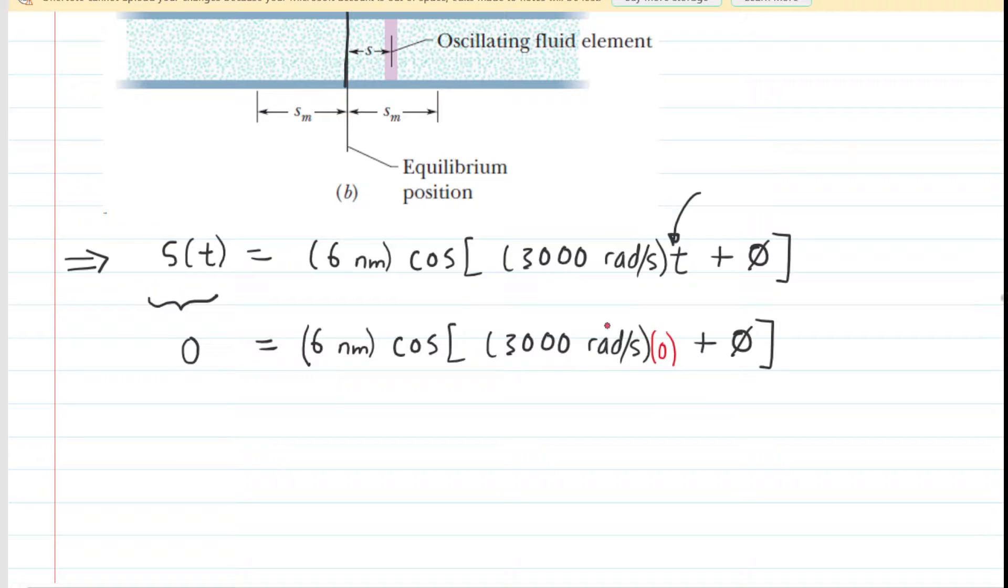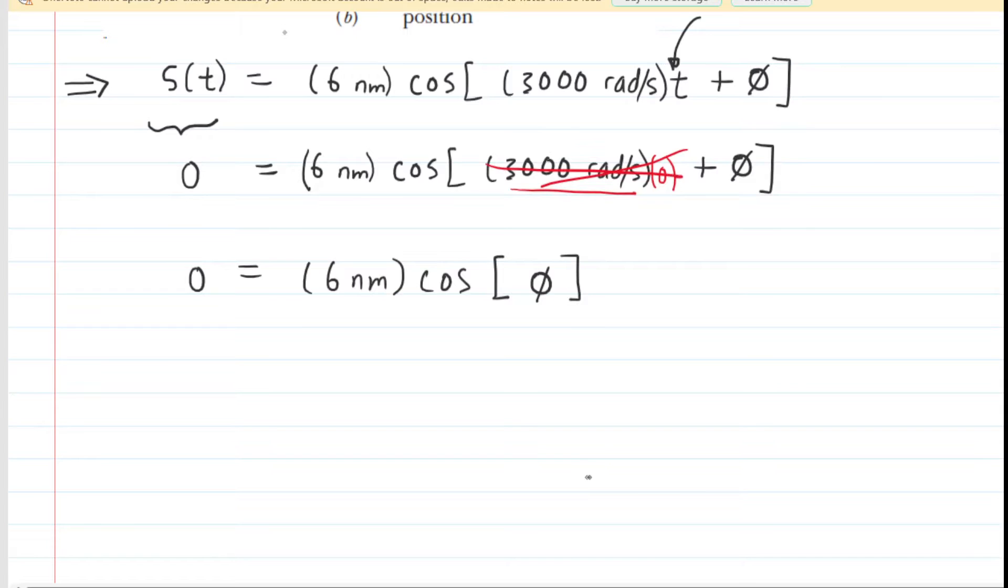And now that we've inserted those values, we can simplify the equation and solve for the phase angle. Here we have 3,000 radians per second multiplied by 0 seconds, so that term right there will become 0. And now we will continue solving for the phase angle. If we divide both sides of this equation by the 6 nanometers, then the left-hand side remains 0, and the 6 nanometers cancel on the right-hand side.